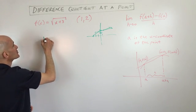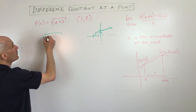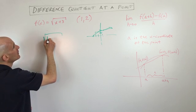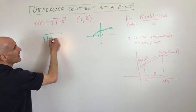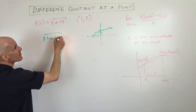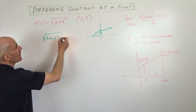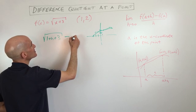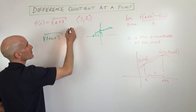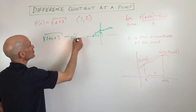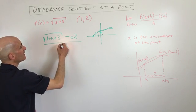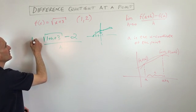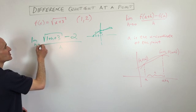We've got square root of one plus h plus three, minus f of one, which is one plus three, square root of four is going to give us two, all divided by h. And we're looking at the limit as h approaches zero.